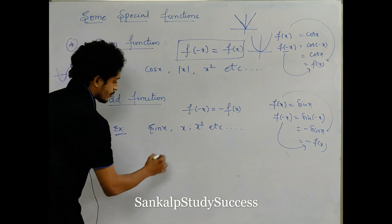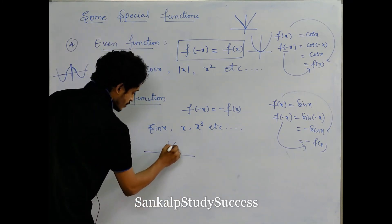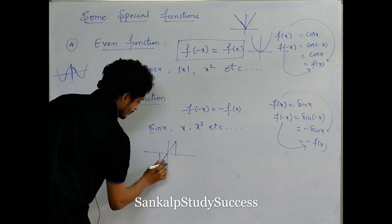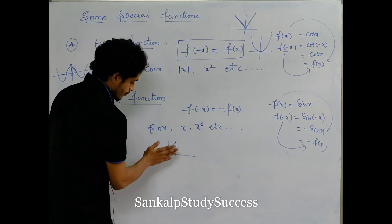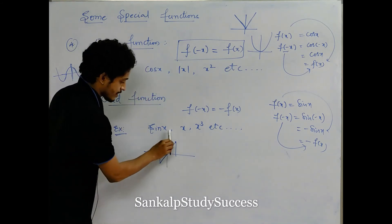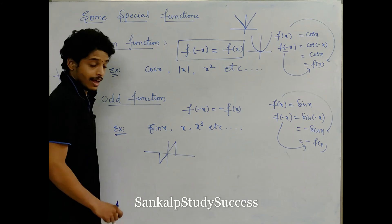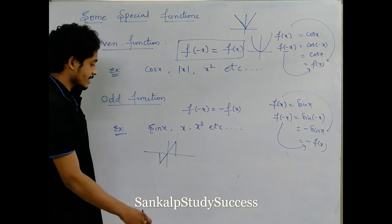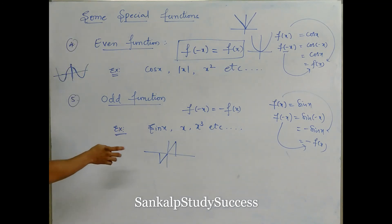Odd function is symmetrical about the origin. If you fold the paper — first fold along the x-axis, then fold along the y-axis — the graph will coincide. That means origin symmetry. So the sin function is an odd function and is symmetrical about the origin.